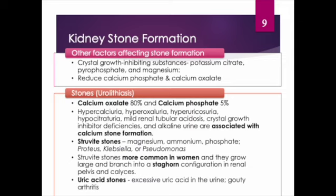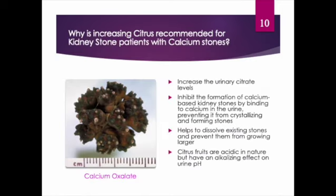Increasing citrus in the diet is recommended for kidney stone patients with calcium stones because it increases urinary citrate levels, which inhibits the formation of calcium-based kidney stones by binding to calcium in the urine. If citrate binds to calcium in the urine, it can't further crystallize and form calcium stones. It also helps dissolve existing stones and prevents already-formed stones from becoming larger. Citrus fruits are acidic in nature but have an alkalizing effect on urine pH.